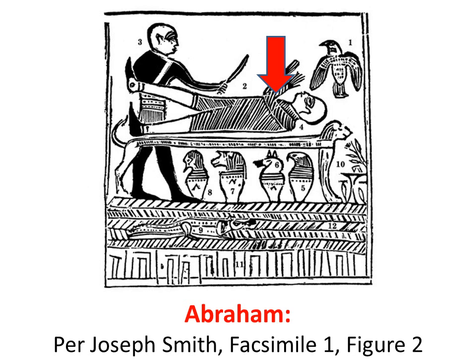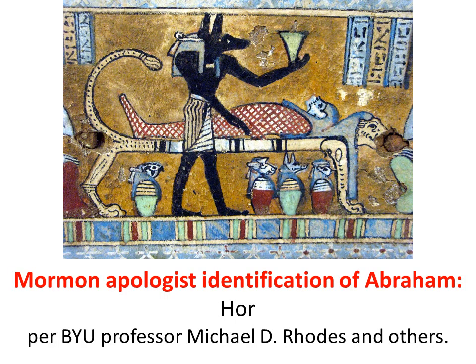Abraham — per Joseph Smith, in facsimile one, figure two, the guy lying there on the lion couch was Abraham, who was about to be sacrificed by Elkenah. But Mormon apologists have had to redefine who was lying on the lion couch — they identified the person as Osiris, because every other Egyptologist in the world identified the person lying on the couch as Osiris. People like Michael D. Rhodes finally had to admit that yeah, that's Osiris lying on the couch and that is Anubis above him.